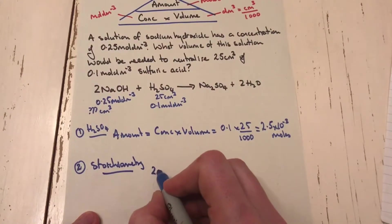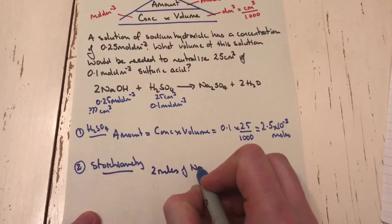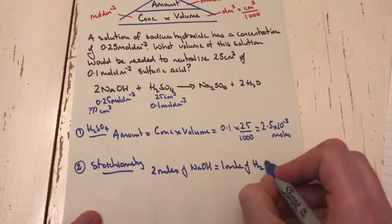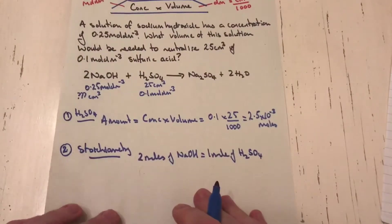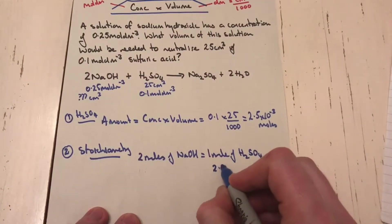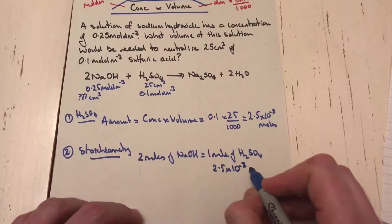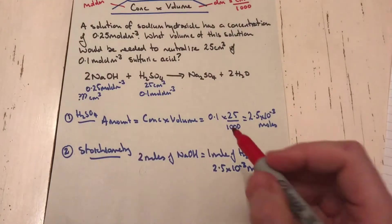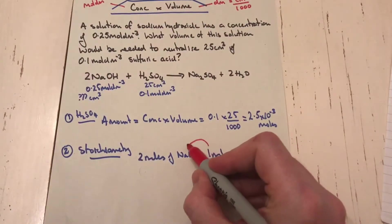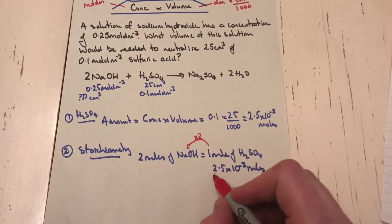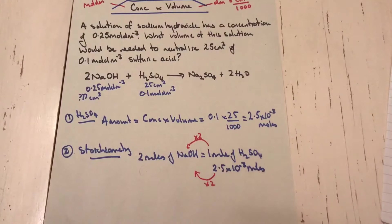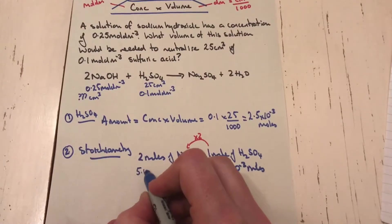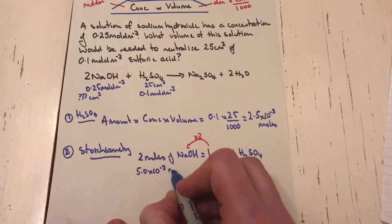Writing it out: 2 mol NaOH reacts with 1 mol H₂SO₄. I have 2.5 × 10⁻³ mol of H₂SO₄. The ratio is ×2, so I double this to get the moles of NaOH: 5.0 × 10⁻³ moles.